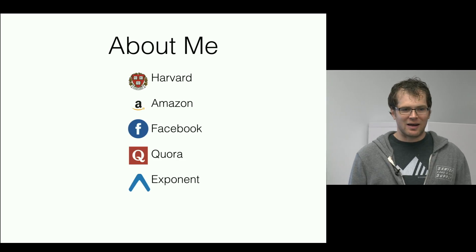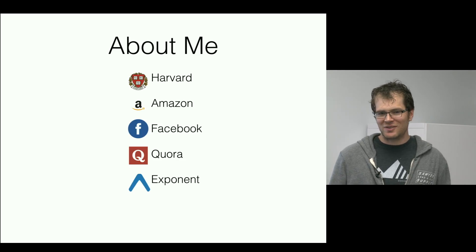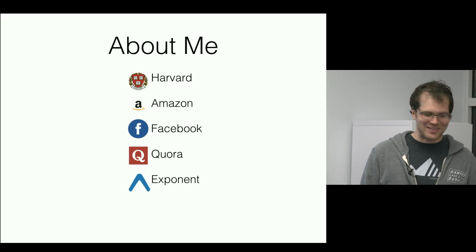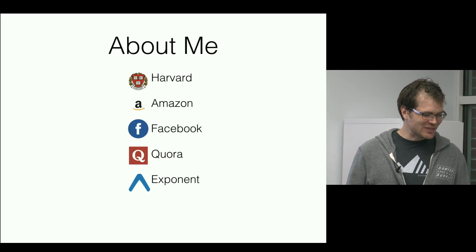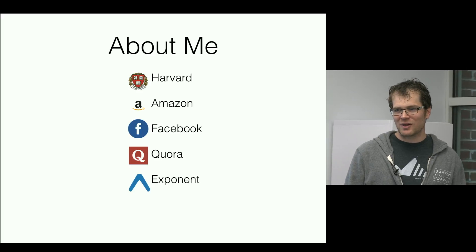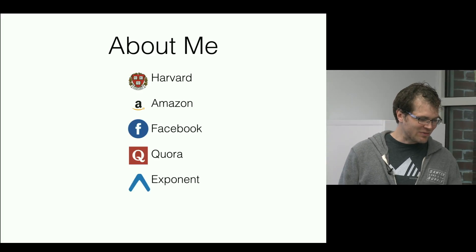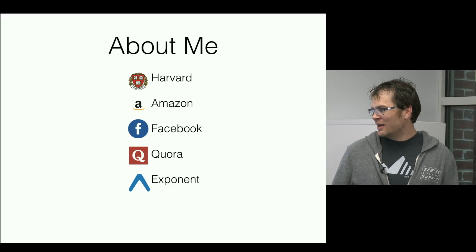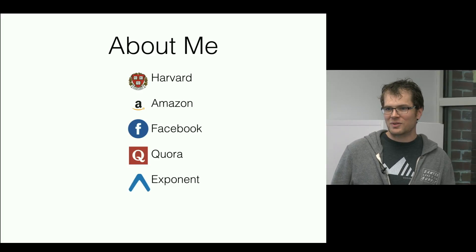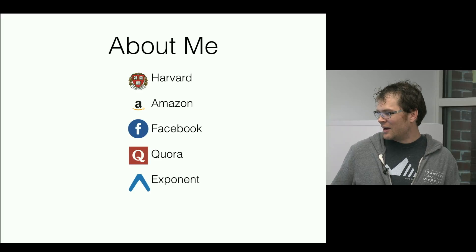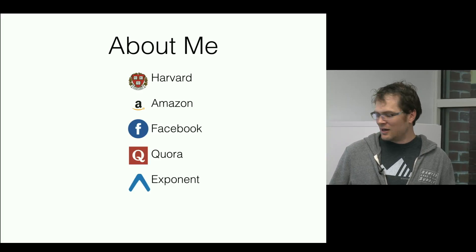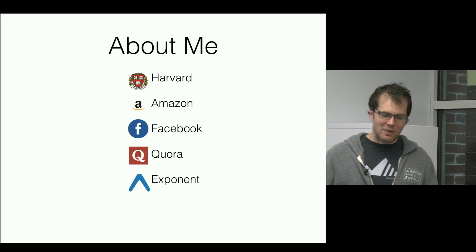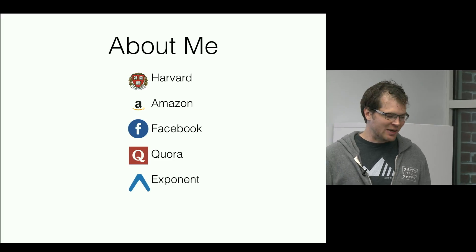A little bit about me: I went to Harvard, class of 2003, so I took CS50 in 1999. I was a CS concentrator. After graduating, I got a job at Amazon for about two and a half years, then went to Facebook in 2006, left in 2009 and started Quora — a question and answer service. Then a few years ago I started working on Exponent, which came out of problems I was having building mobile apps at Quora.